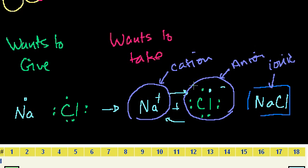So those are the three bonds, and hopefully it gives you a little intuition. This is super useful, because in the rest of chemistry, everything we do will essentially involve some combination of these bonds. We'll start talking about what these bonds mean in terms of boiling points and the properties of molecules themselves. See you in the next video.